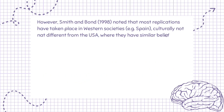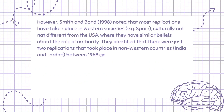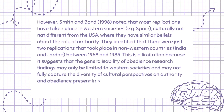However, Smith and Bond (1998) noted that most replications have taken place in Western societies, e.g. Spain, which are not culturally different from the USA, where they have similar beliefs about the role of authority. They identified that there were just two replications that took place in non-Western countries — India and Jordan — between 1968 and 1985. This is a limitation because it suggests that the generalisability of obedience research findings may be limited to Western societies and may not fully capture the diversity of cultural perspectives on authority and obedience present in non-Western countries like India and Jordan.